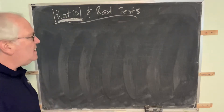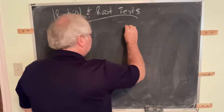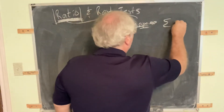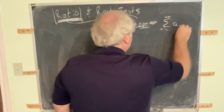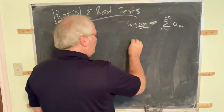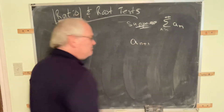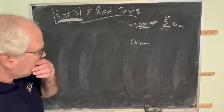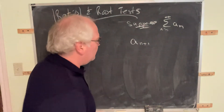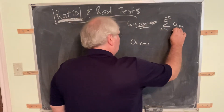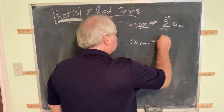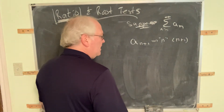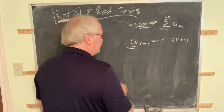Before we get into that, I want to talk just a bit about a little notion. Suppose we have a series and I want to discuss what we mean by a_(n+1), just to make sure we have all the i's dotted and t's crossed. What we mean by a_(n+1) is: in the expression for a_n, everywhere you see an n, it gets replaced with (n+1), and then you simplify.